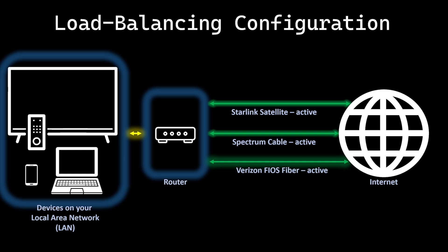Aggregation, on the other hand, combines your internet connections and is often implemented as load balancing. Without any rules, load balancing can distribute traffic in a round-robin fashion across your WAN connections. This increases overall bandwidth but can cause unpredictable latency, as you won't necessarily know what traffic is being routed over which connection. Good routers allow you to set rules for what type of traffic — or even which device's traffic — is routed over which connection.